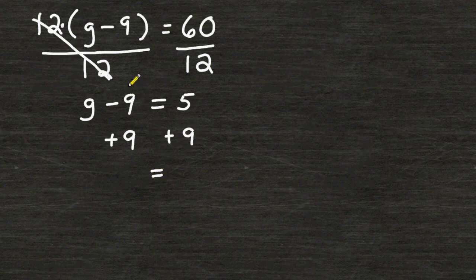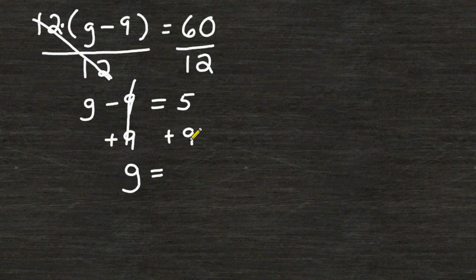On the left hand side, opposite integers cancel out to be 0. So all we have remaining is the variable g on the left hand side. And on the right hand side we have to add 5 and 9 together which is 14.